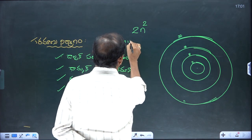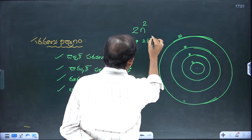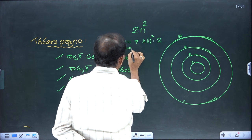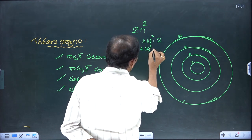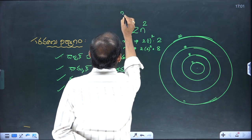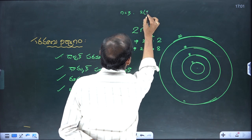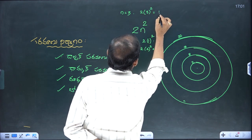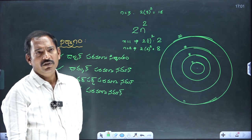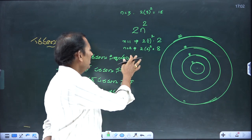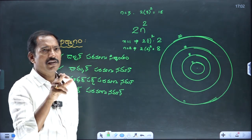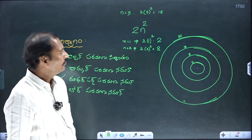For the first orbital (n=1): 2 × 1² = 2 electrons. For the second orbital (n=2): 2 × 2² = 8 electrons. For the third orbital (n=3): 2 × 3² = 18 electrons. For the fourth orbital (n=4): 2 × 4² = 32 electrons.